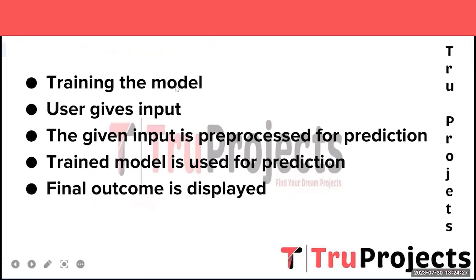The next step is training the model. Once these models are set up, we train them using the transformed numerical data from the count vectorizer. During training, the models learn to recognize patterns and relationships between words and sentiments, enabling them to make accurate predictions on unseen data.